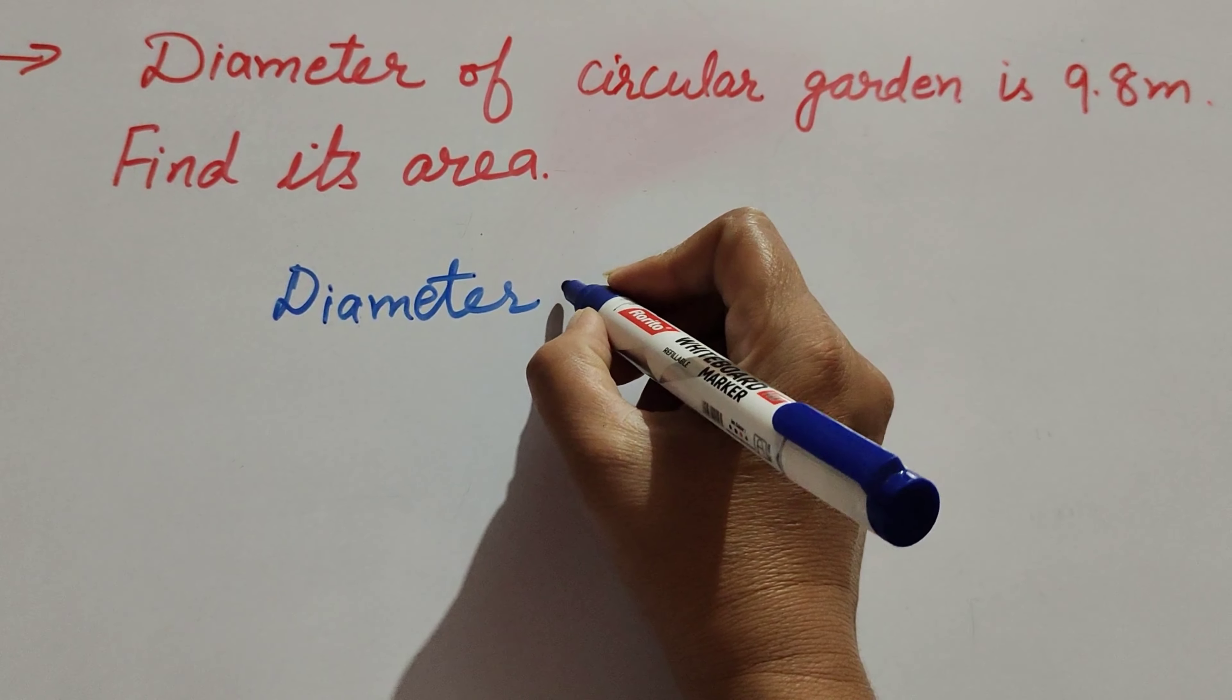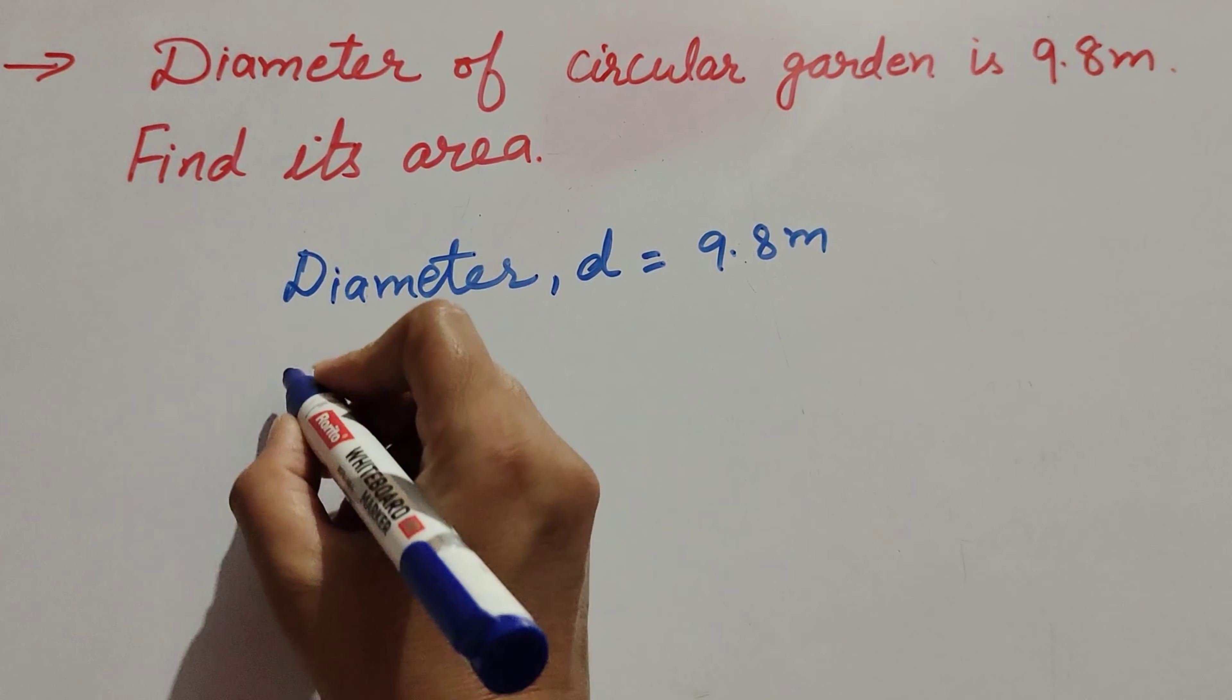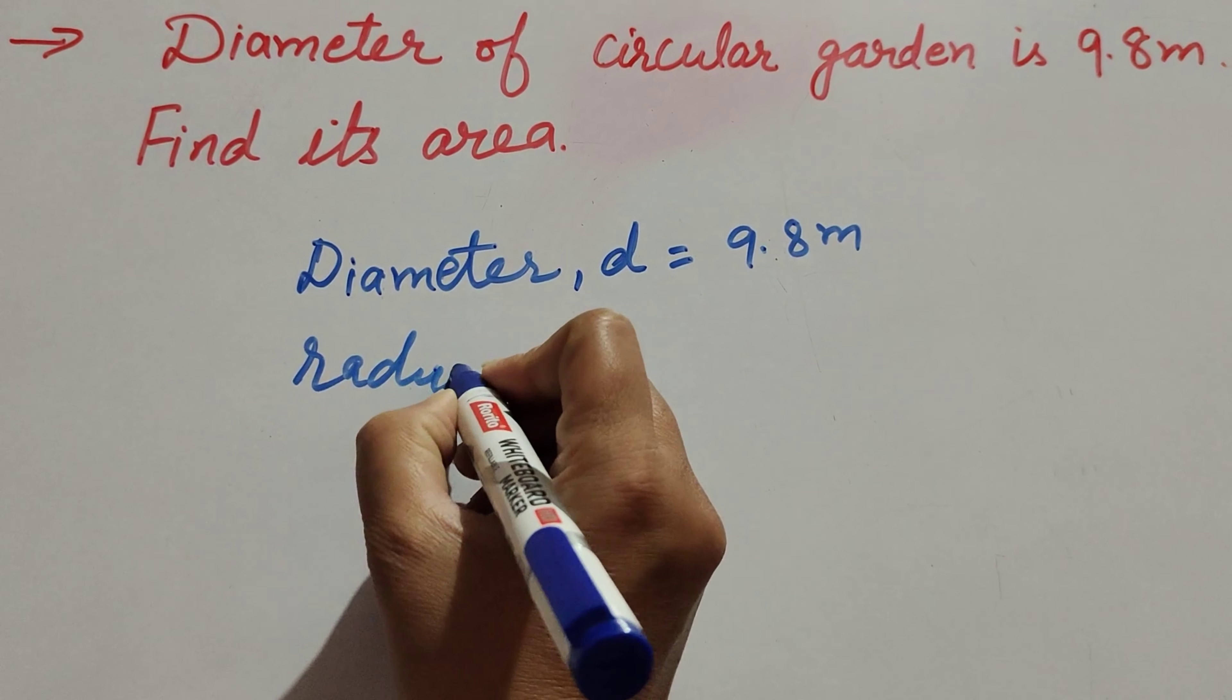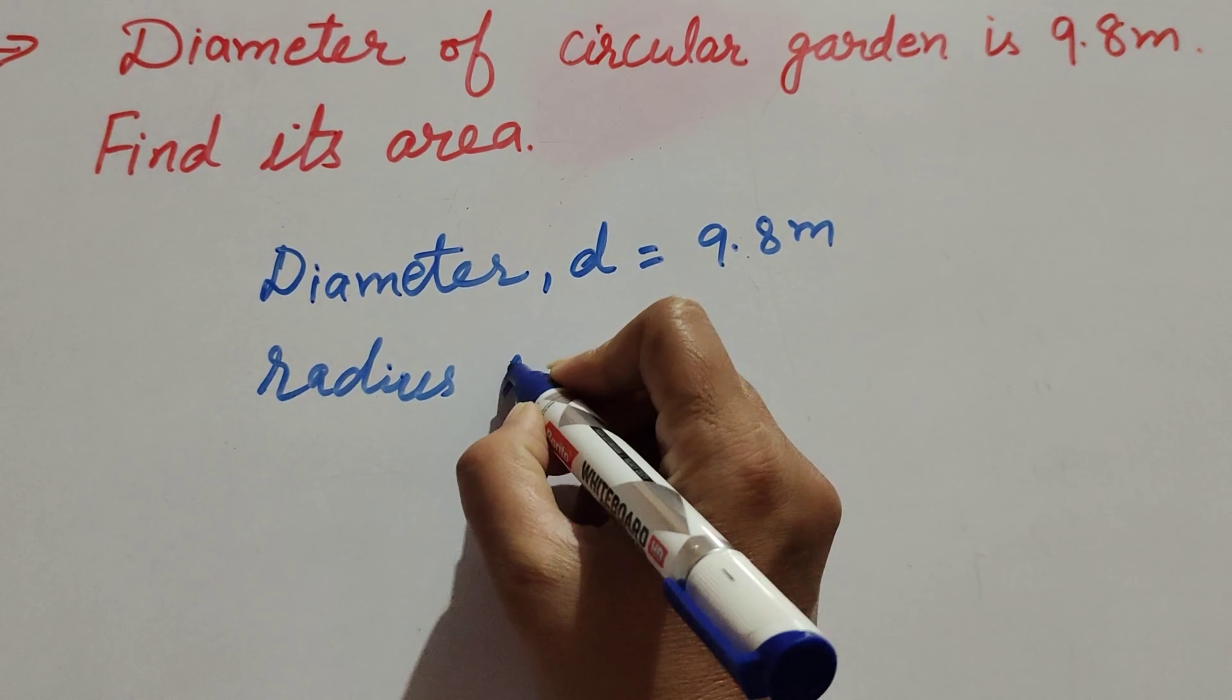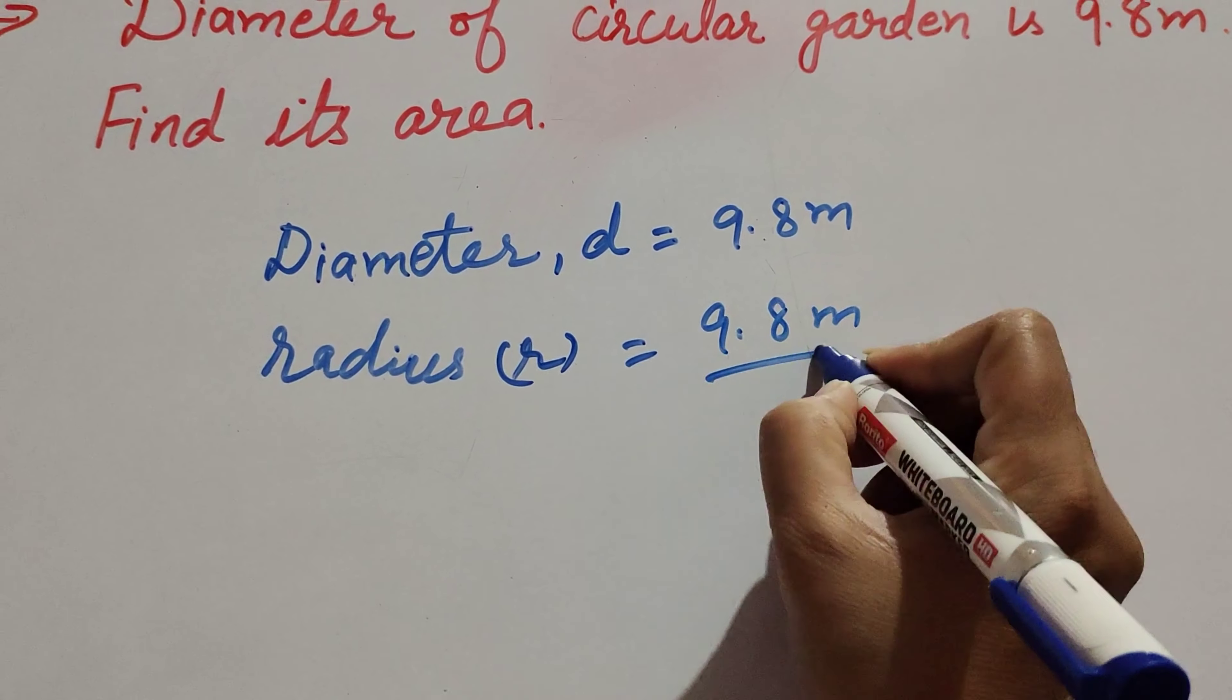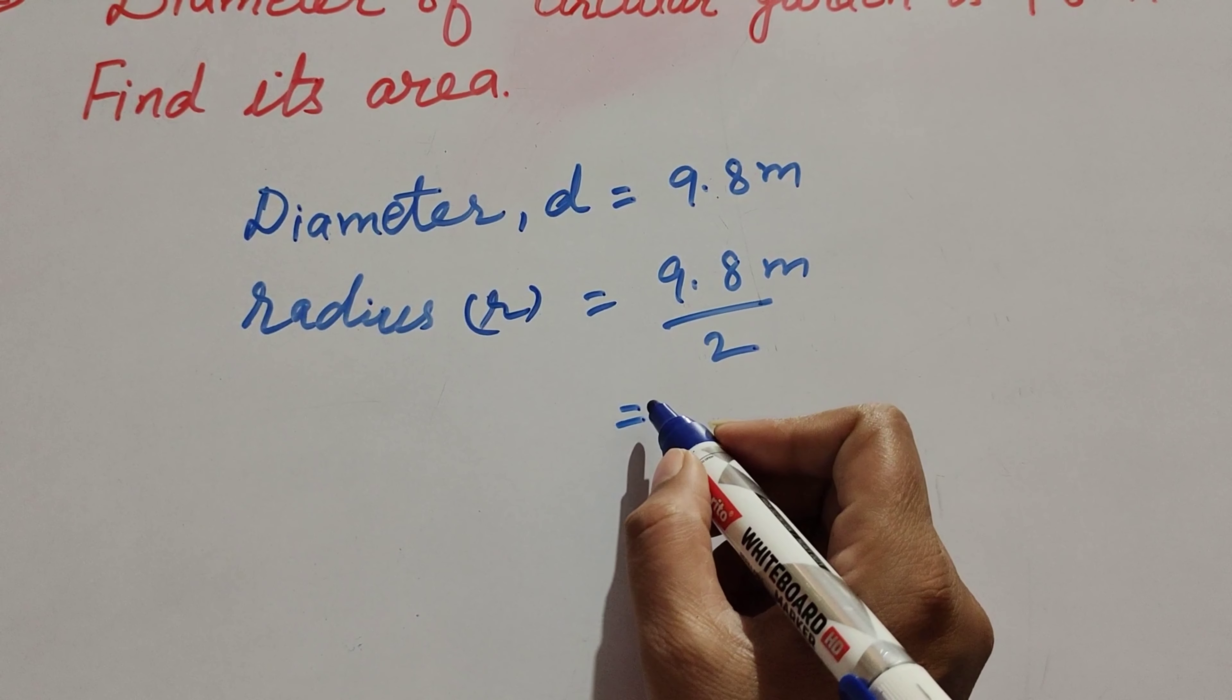Diameter, denoted by d, equals 9.8 meters. First, we find the radius. Radius, denoted by r, equals 9.8 meters divided by 2. When we divide 9.8 by 2, we get 4.9 meters.